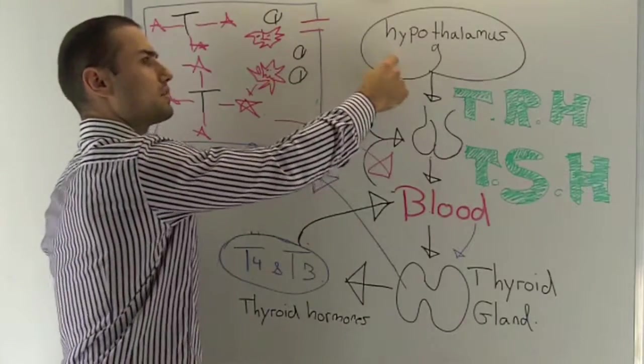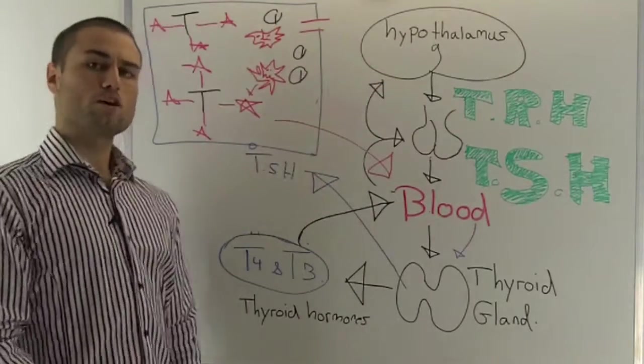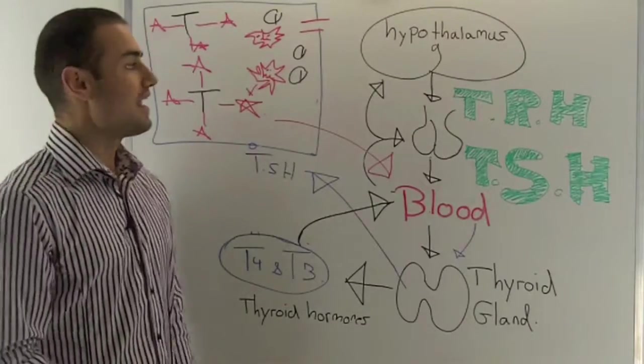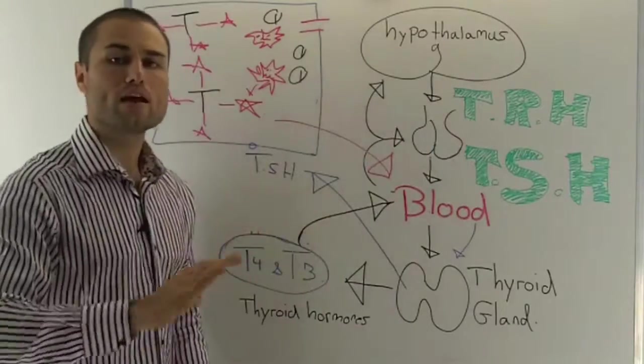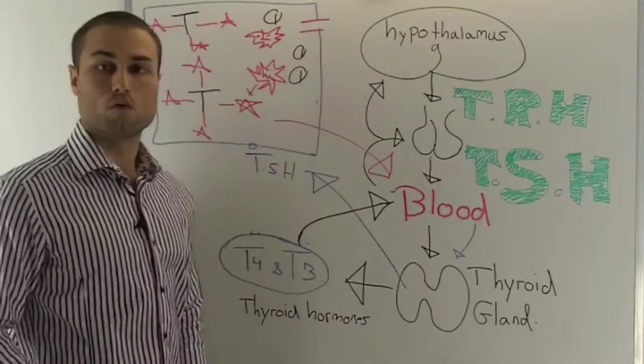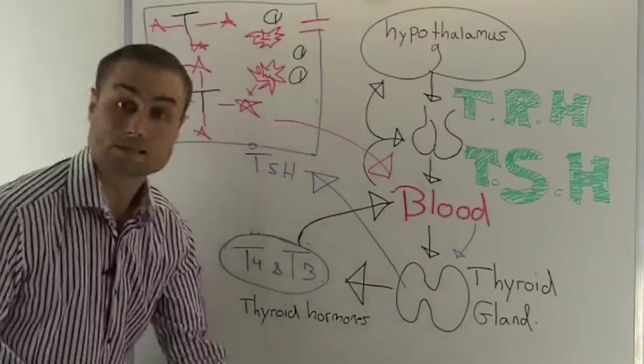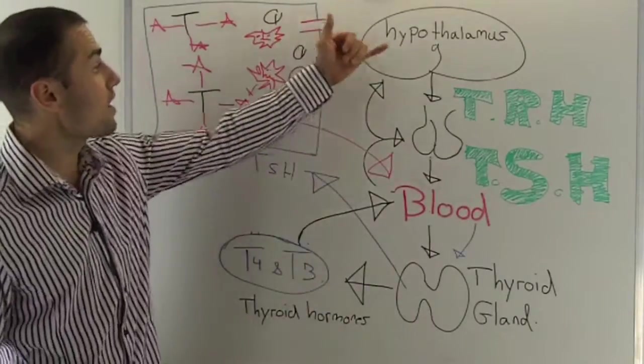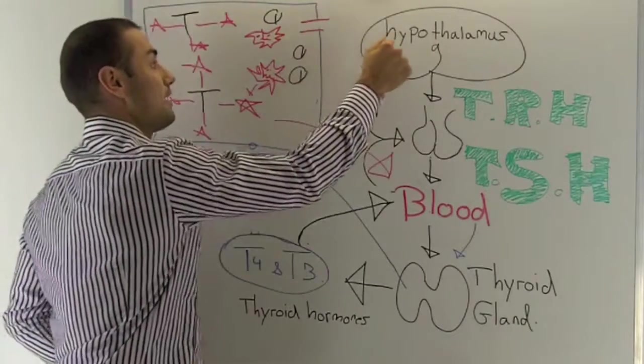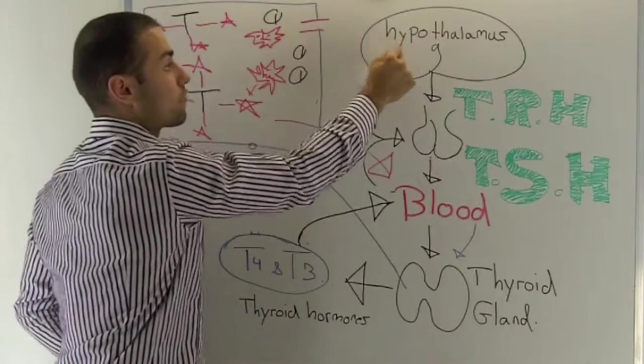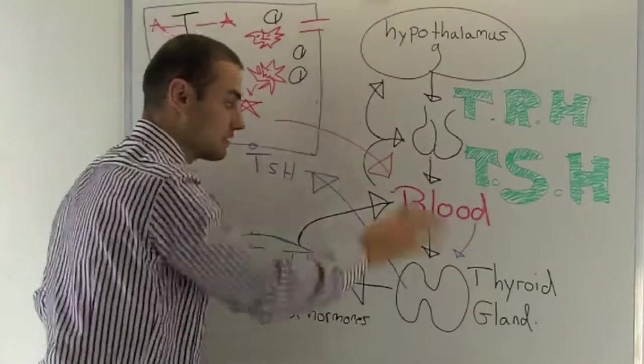So your hypothalamus thinks, wait a second, there's so much T3 and T4 in the blood, I don't need to send no more TRH. I don't need to stimulate TSH. I don't need to make no more T3, T4. So your whole metabolism shuts down. Because remember, your hypothalamus is a computer system.